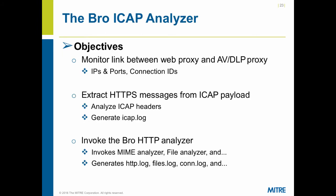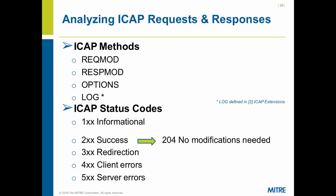ICAP does a lot of things, but the objectives of the ICAP analyzer are focused: we're monitoring the link between the web proxy and the antivirus or data loss prevention device. We want to extract the HTTPS messages from the ICAP payload — that's what we currently can't see. We could use BRO at other parts of the network to see regular HTTP traffic, but it's the HTTPS traffic we care about most. Once we pull those HTTP messages out of the ICAP payload, we want to feed them back into the BRO HTTP analyzer to get all the benefits — the MIME analyzer, file analyzer, and all the other logs BRO would ordinarily produce.